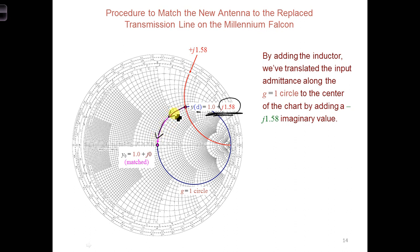And so we're basically getting rid of this imaginary part, and we wind up at the center of the Smith chart, which is where our matched condition is, Y0 is equal to 1, normalized Y0.